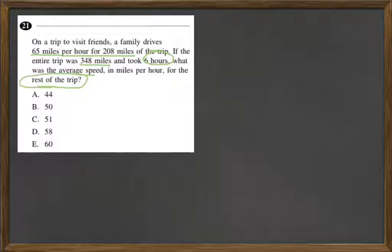So we want to know between miles 208 and 348 how fast they were going on average in miles per hour. Well, first we've got to see how long it took them to go that first 208 miles at 65 miles per hour.